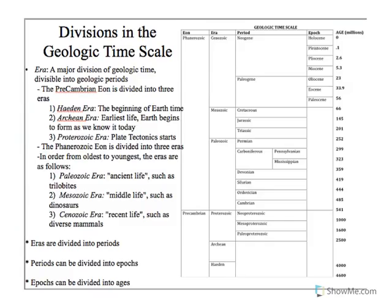We can break those eons down into eras. In the Precambrian we have three eras. We have the Hadean, which is the oldest — you might notice that word sounds like Hades, because that's what Earth was definitely like at that point: a molten mess with nothing solid. Then we have the Archean, where we have the earliest life, Earth begins to form different layers — the crust, the mantle, and the core — and we start to see the oceans and atmosphere forming. Then we have the Proterozoic, where plate tectonics starts and we begin to see things that look a little more modern as far as life goes.